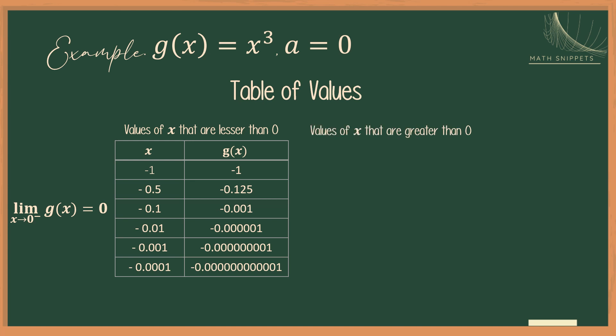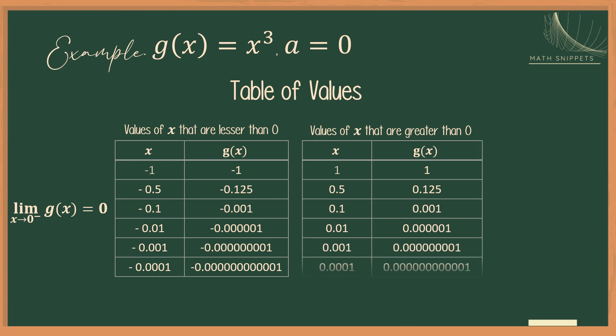On the other side, when we take values of x that are greater than 0, we see that the values stay positive, but they decrease to 0, or they are getting closer and closer to 0. So we say that the limit of g of x as x approaches 0 from the right is 0.